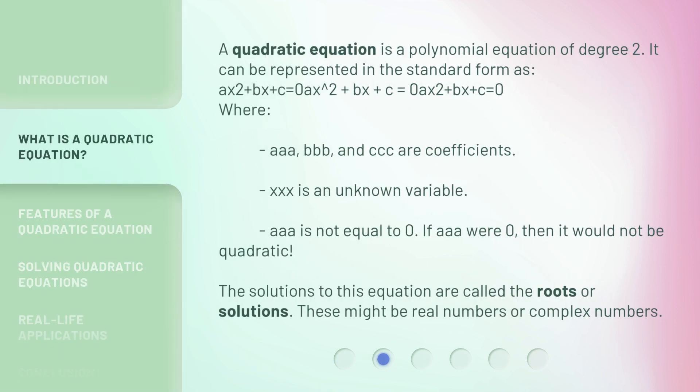A quadratic equation is a polynomial equation of degree 2. It can be represented in the standard form as ax² + bx + c = 0, where a, b, and c are coefficients, and x is an unknown variable.